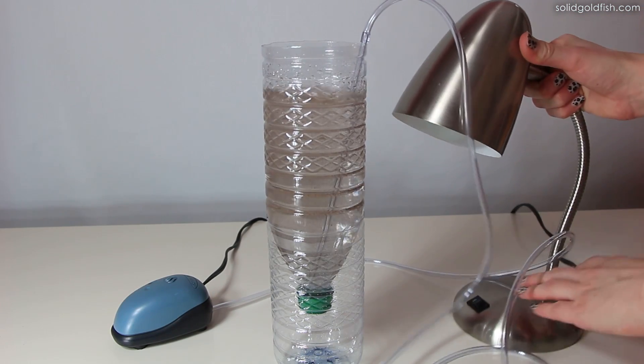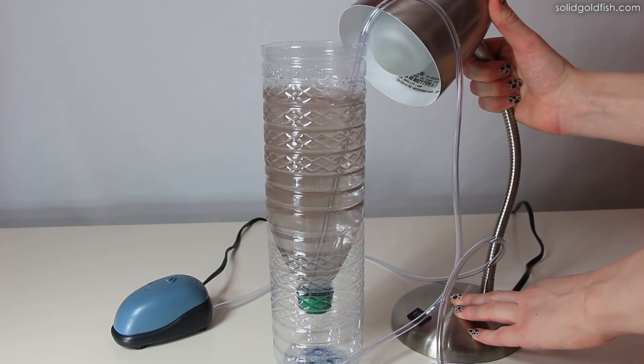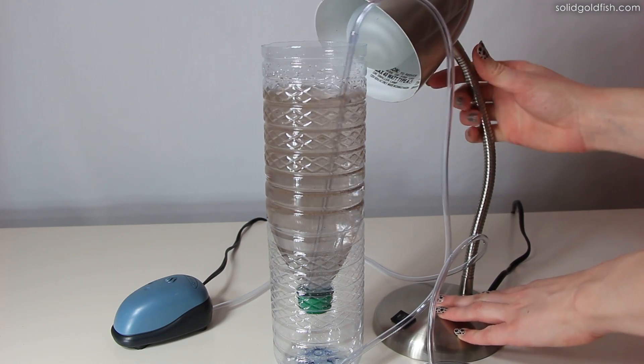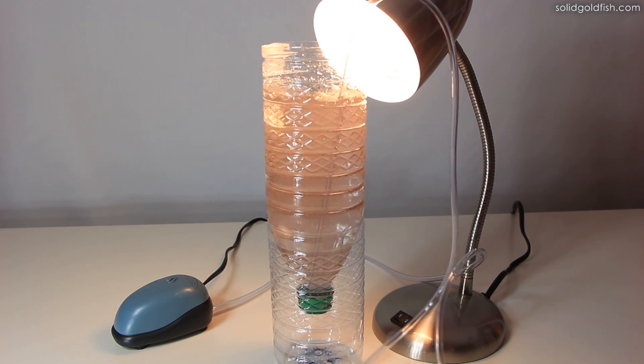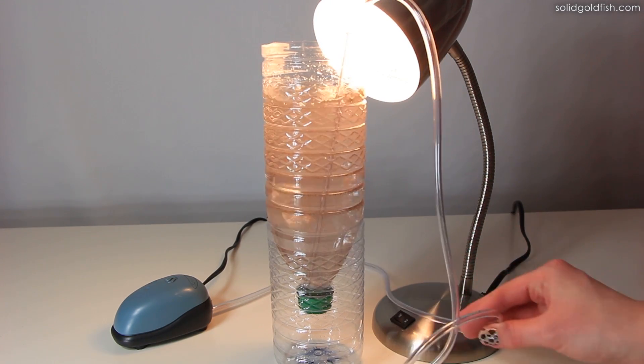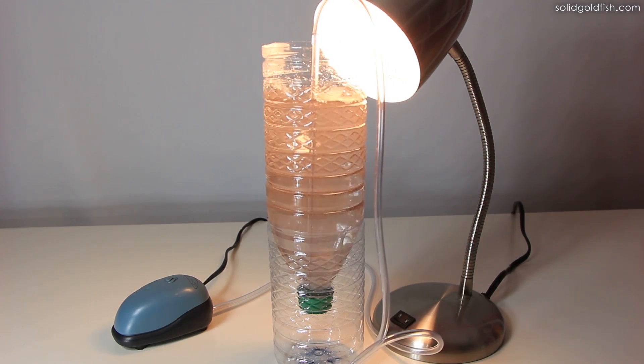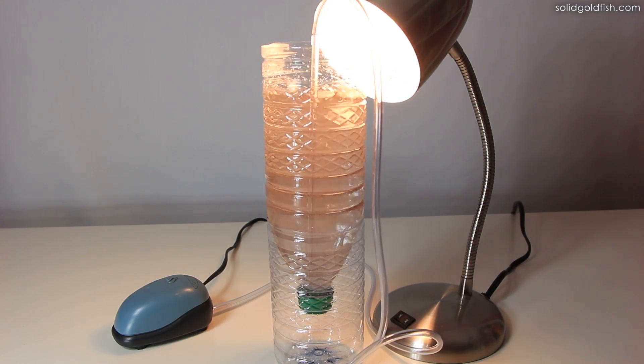Turn on your lamp and position it directly over the hatchery. This is done because brine shrimp need a constant light source in order to hatch, and it also helps heat the water so they hatch faster. If kept at 78 to 80 degrees Fahrenheit, the brine shrimp should all hatch in about 24 hours.